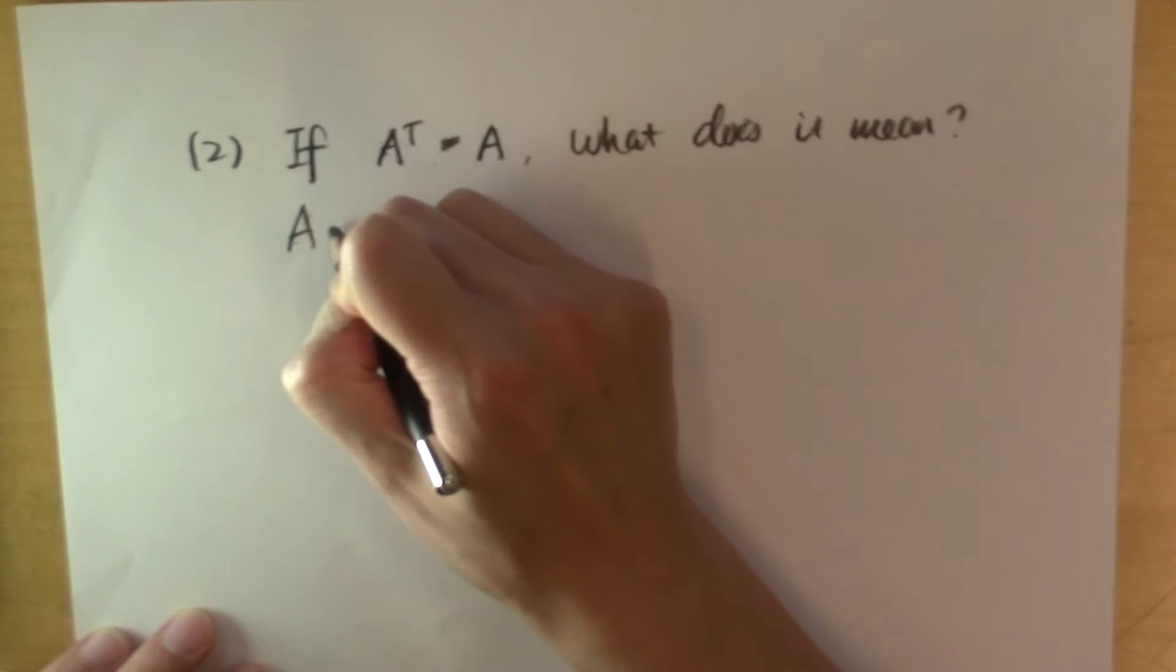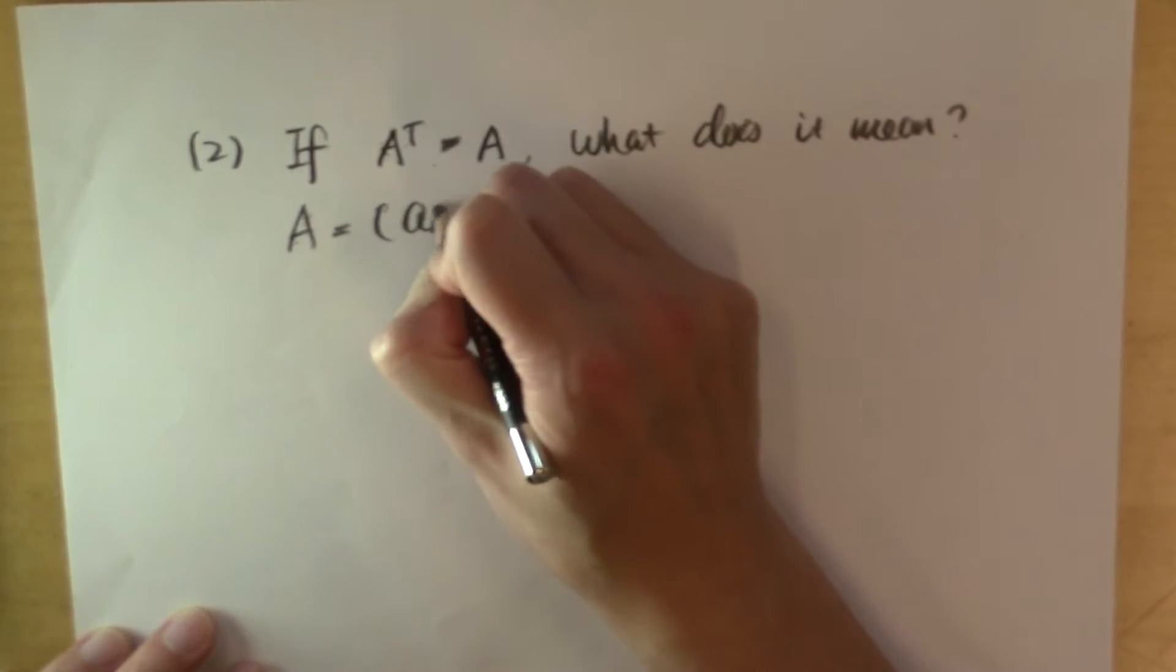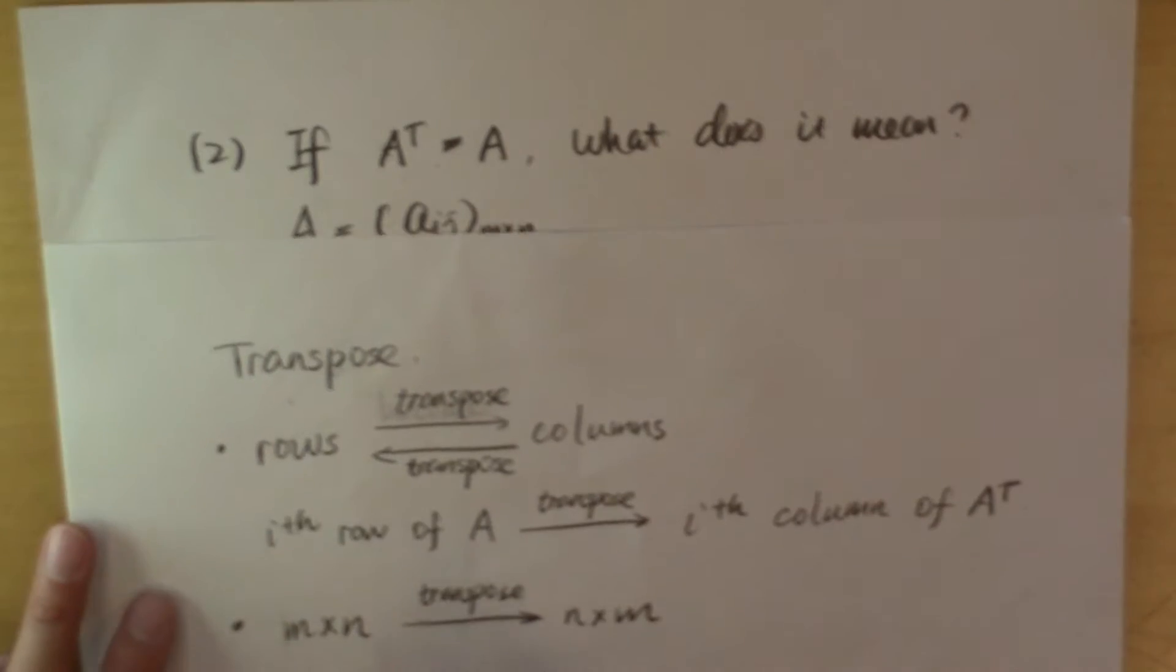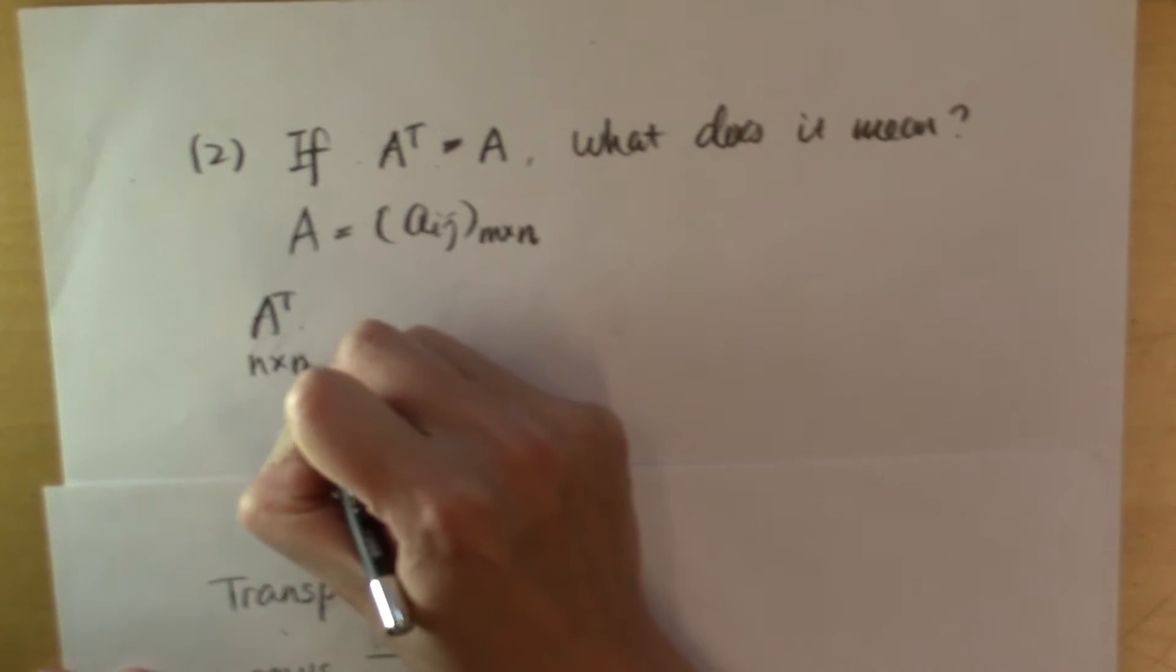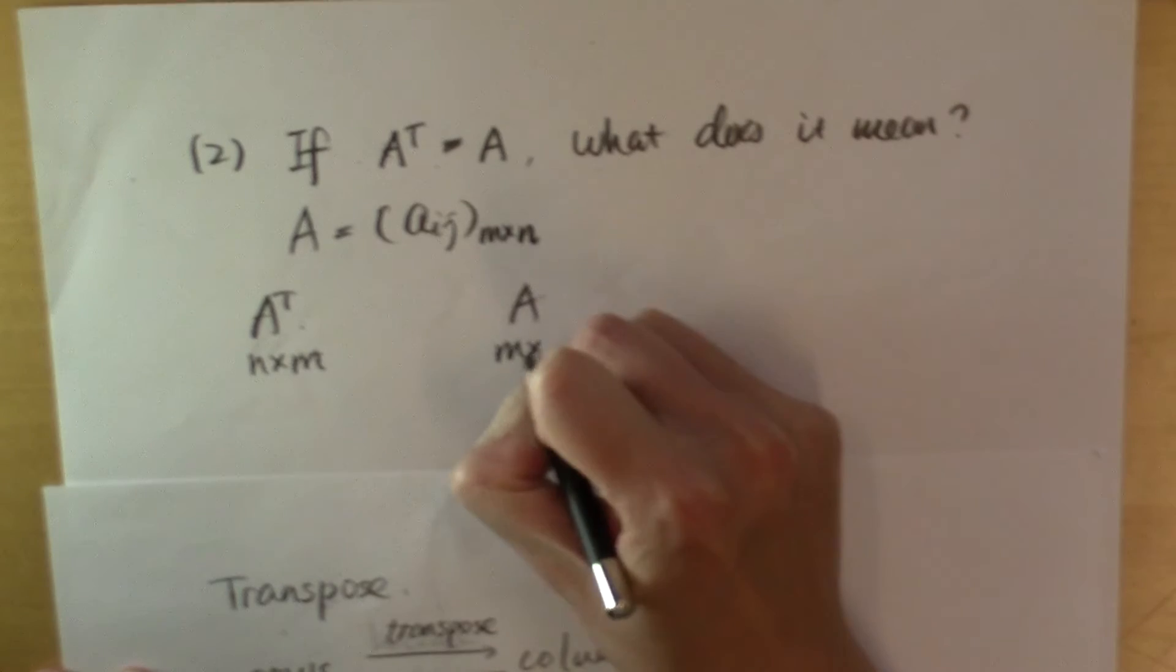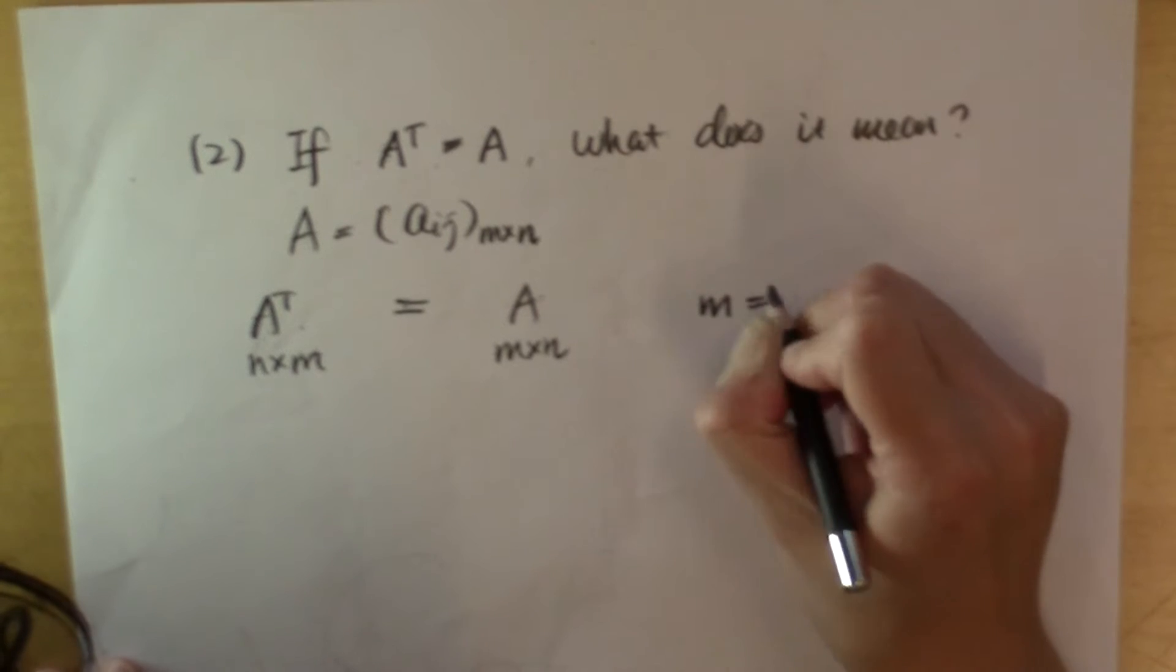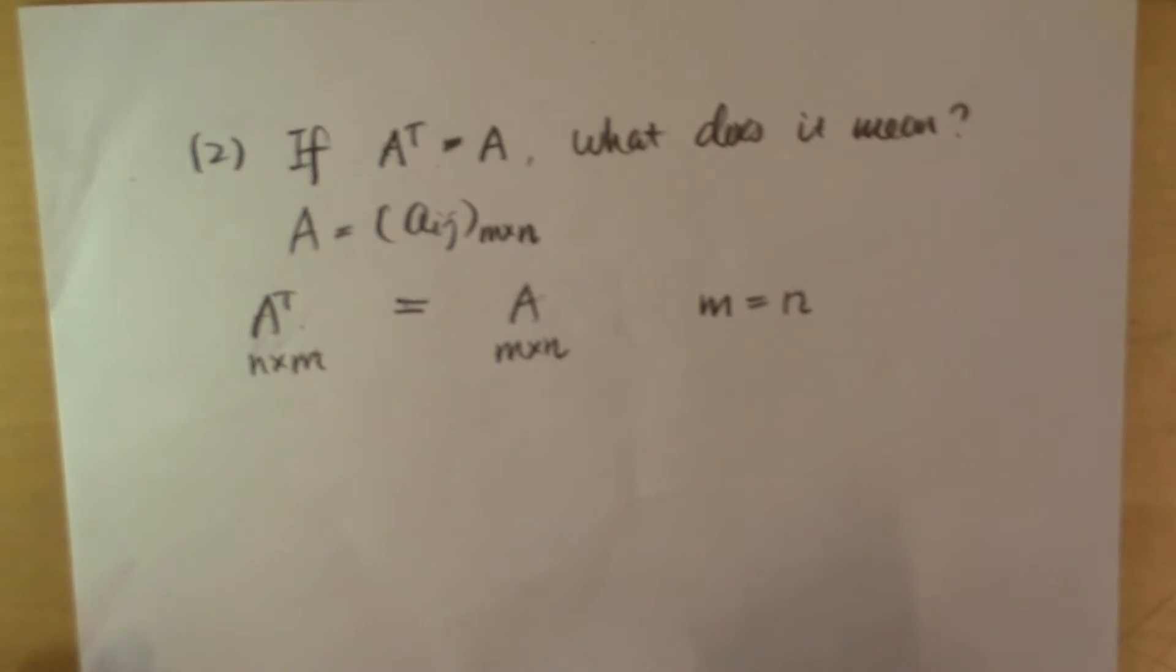Let's say the matrix A is a sub ij dimension m by n. Then because of what we talked about, A transpose is going to be n by m, while A is m by n. So if they are equal to each other, what does that mean? We have to have m equal to n, the number of rows equal to the number of columns for matrix A.